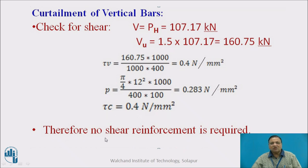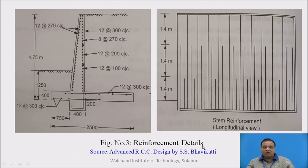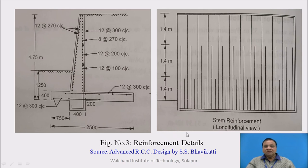Since tau V equals tau C, no shear reinforcement is required. The stem has only vertical steel to take the bending moment and nominal minimum steel of 0.12% in both directions on both faces. This is how the curtailment of longitudinal reinforcement is done in the case of the stem of a cantilever retaining wall.